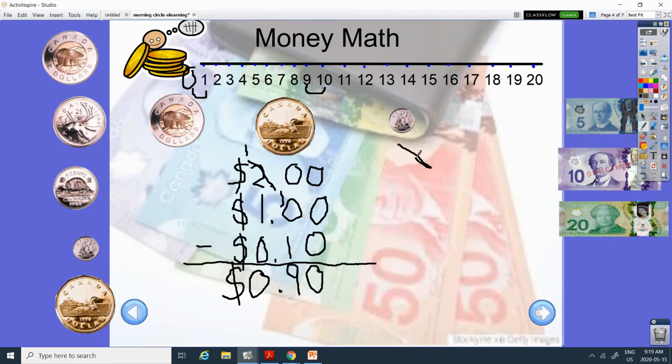Let's try and add them. So I'll write my $2 again. My $1. And my 10 cents. So instead of subtracting this time, I'm going to add.